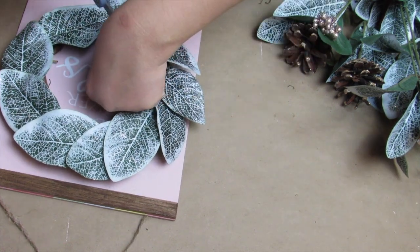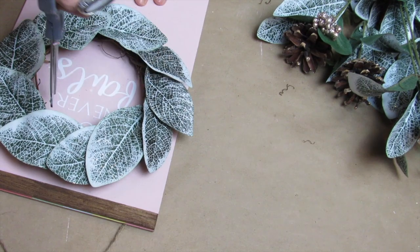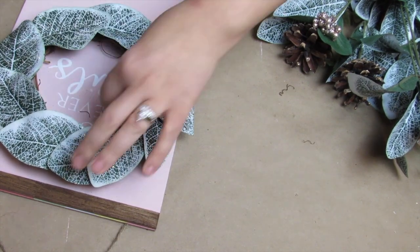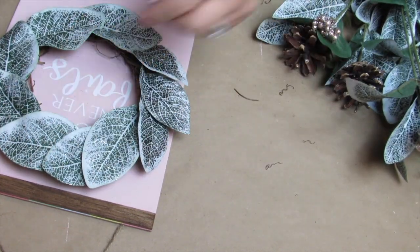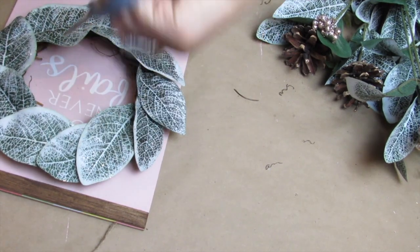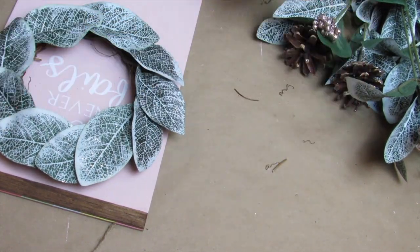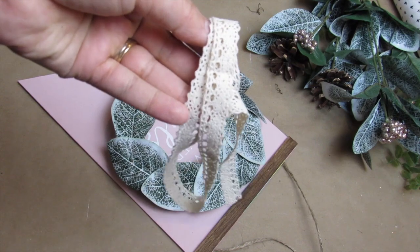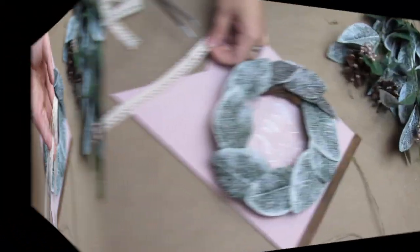Now taking some scrap Dollar Tree lace ribbon—I always save my scraps—I'm just going to cut on a diagonal where the pendant kind of meets.